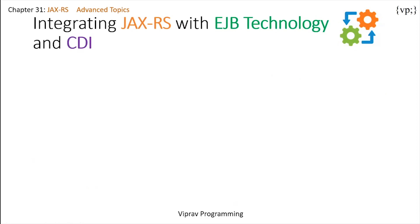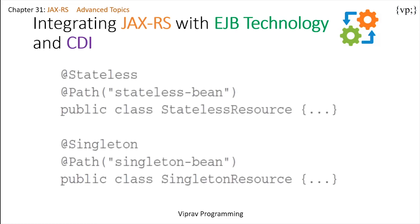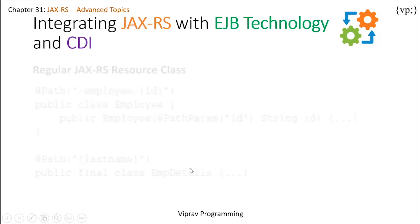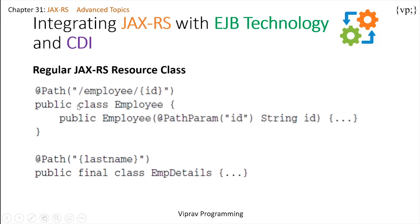Let's take a look at integrating JAX-RS with EJB technology and CDI. JAX-RS works with enterprise Java bean technologies and context and dependency injection for Java EE. To show you the power of JAX-RS with EJB and CDI, let's look at a stateless session bean and singleton bean. In this example, you can see the stateless bean and the singleton bean alongside a regular JAX-RS resource class with your class employee, which has your path param and gives out the employee details.